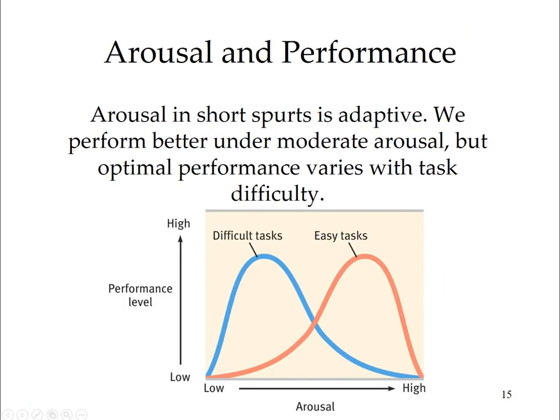Arousal in short spurts is adaptive. We perform better under moderate arousal, but optimal performance varies with the task difficulty. We seek a moderate level of arousal at all times. With easy tasks, peak performance comes with relatively high arousal, which enhances the dominant, usually correct response. With more difficult tasks, the optimal arousal is somewhat less.